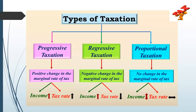Coming to regressive taxation: there is a negative change in the marginal rate of tax — the income increases but the tax decreases. Coming to the third type, proportional taxation: there is no change in the marginal rate of tax. The tax rate does not change in proportion to the increase in income.